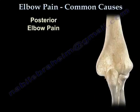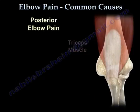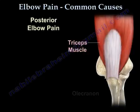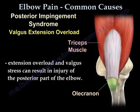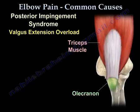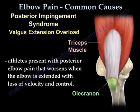Posterior elbow pain: the triceps muscle is attached to the olecranon. Posterior impingement syndrome is a valgus extension overload — valgus and extension overload results in injury of the posterior part of the elbow. The athlete presents with posterior elbow pain that worsens when the elbow is extended, with loss of velocity and control.